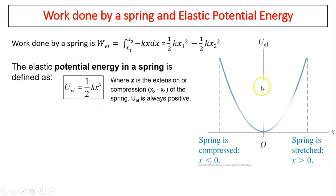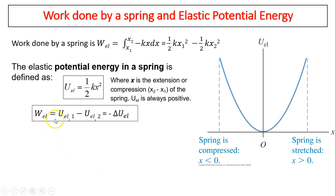Here is a graph of U_el versus x. x can be positive or negative; in both cases U_el is positive — it's a parabola. Work done by the elastic force equals U_el at position one minus U_el at position two, which equals the negative change in elastic potential energy — similar to the relationship between gravitational potential energy and work done by gravity.